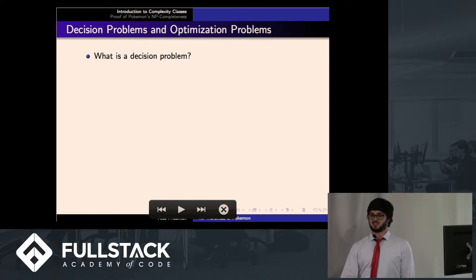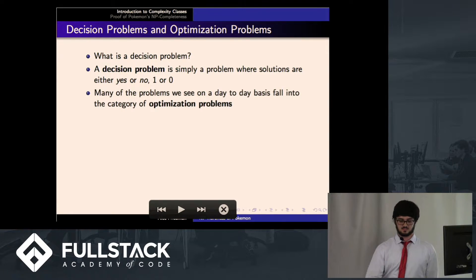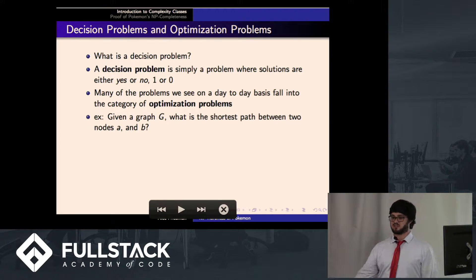So I've been mentioning decision problems throughout those past slides. So what is a decision problem exactly? A decision problem is a problem where the solutions are yes or no, 1 or 0. Many of the problems we might see from day to day would actually fall into the category of optimization problems, which is, for example, if we have a graph G with a bunch of nodes, what is the shortest path from node A to node B? But it turns out that all of these optimization problems have a decision problem that is equivalent to it.